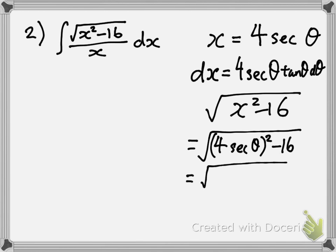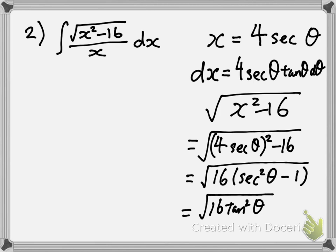That's gonna be 16 secant squared theta minus 16. If I factor out the 16, I will get 16 times secant squared theta minus 1. But secant squared theta minus 1 is a tangent squared in disguise. And we see why that square root disappears now.